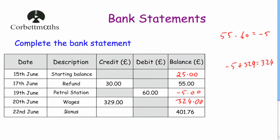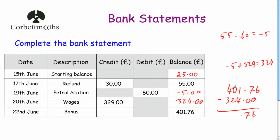Finally, there's a bonus — a credit, since the debit column is greyed out. After the bonus, the balance is £401.76. We work out the difference between £401.76 and £324.00. 6 minus 0 is 6; 7 minus 0 is 7; 1 minus 4 requires borrowing — making it 11 minus 4 equals 7; 9 minus 2 is 7; 3 minus 3 is 0. So the bonus was £77.76.